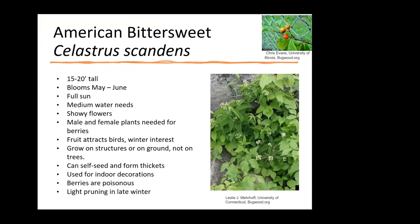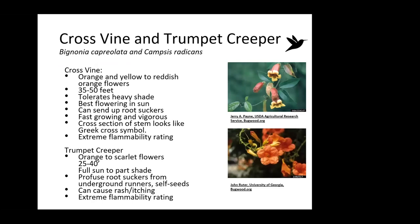Cross vine and trumpet creeper are ones that you have to have a very particular place to grow because they're very large vines. They can send up root suckers, and you do not want to let them grow on your house — these vines have an extreme flammability rating, so think about where you grow them. They'll flower best with good sun, and if you've got a good place and can let them naturalize, they are great for hummingbirds.